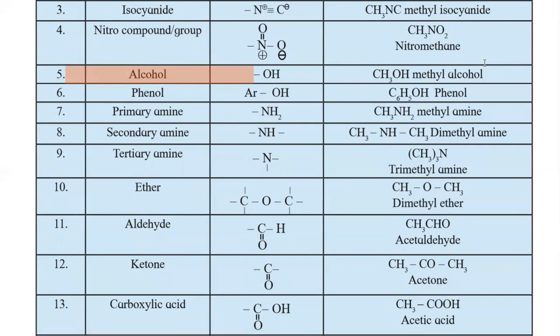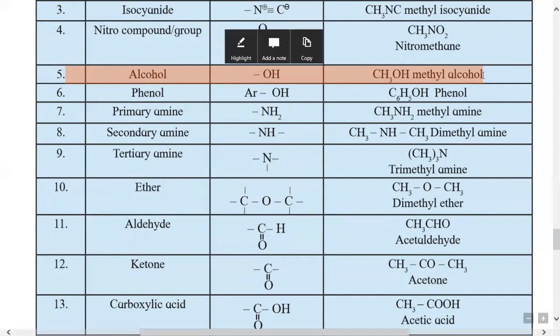The fifth type is alcohol, containing dash OH as a functional group. Example: CH3OH is methyl alcohol; C2H5OH is ethyl alcohol.